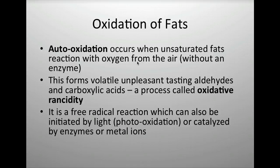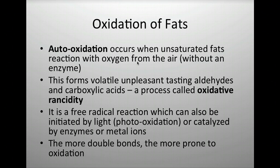Auto-oxidation happens as a free radical process — when you have an unpaired electron — which we've talked about in organic chemistry. It can be initiated by light, which can break a bond and leave an unpaired electron on each side, allowing it to start reacting. Or it could be sped up by enzymes or even metal cations. The more double bonds you have, the more likely oxidation is to occur.